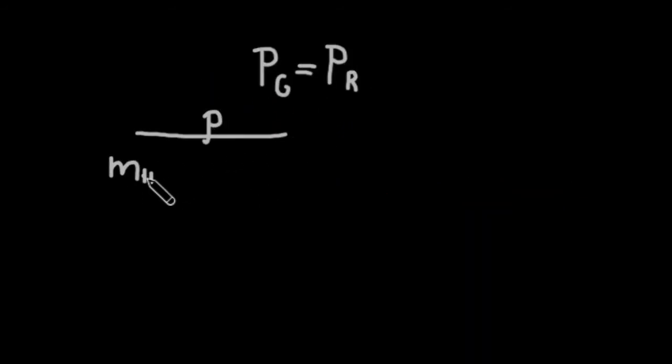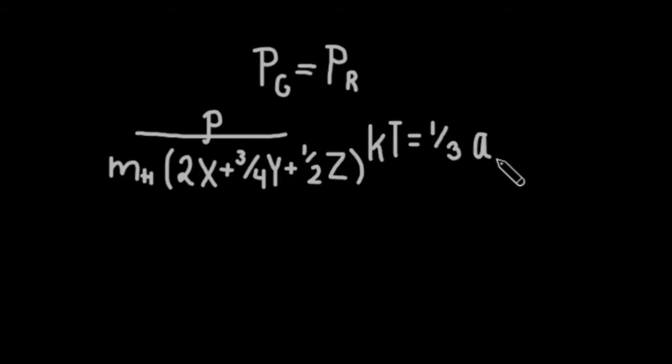We can solve for where these two pressures are equal by setting gas pressure equal to radiation pressure. From here, we can solve for temperature.